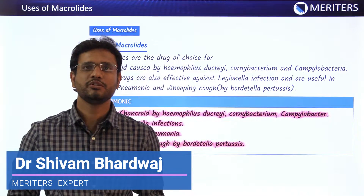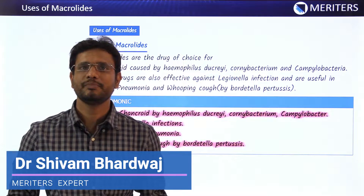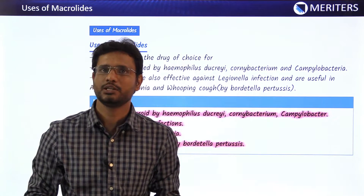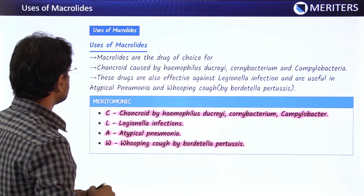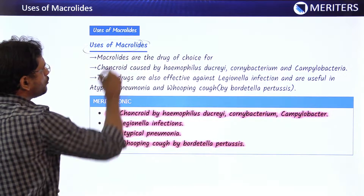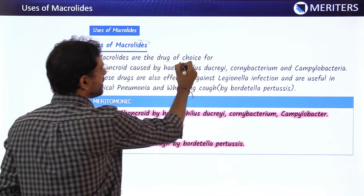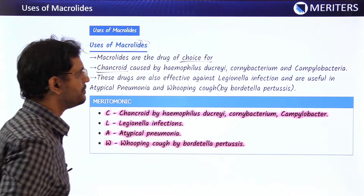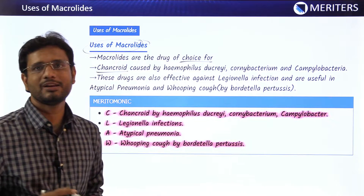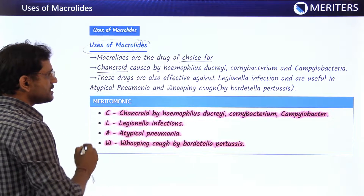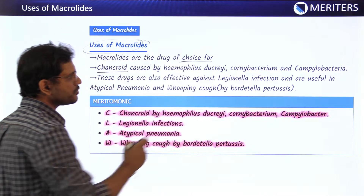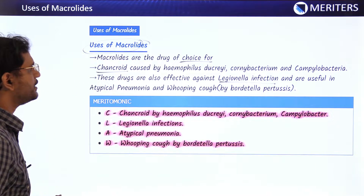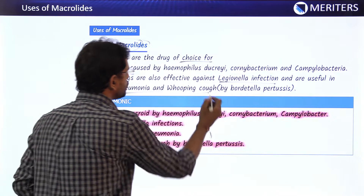In this session we will be discussing the various uses of macrolides, covering only those points which are important from an exam point of view. Macrolides are the drug of choice for chancroid caused by Haemophilus ducreyi, Corynebacterium, and Campylobacter. They are also effective against Legionella infection and are useful in atypical pneumonia and whooping cough.